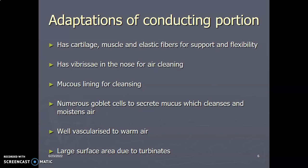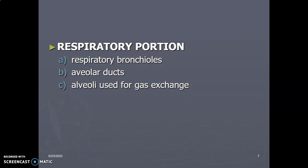The conducting portion mainly helps to condition the air and make it warm, so that by the time it gets to the lung, it has no particles, and it is warm and humidified so that it doesn't injure the lungs. From the conducting portion, we go to the respiratory portion. The respiratory portion contains respiratory bronchioles, alveolar ducts, and alveoli, which are used for gas exchange.